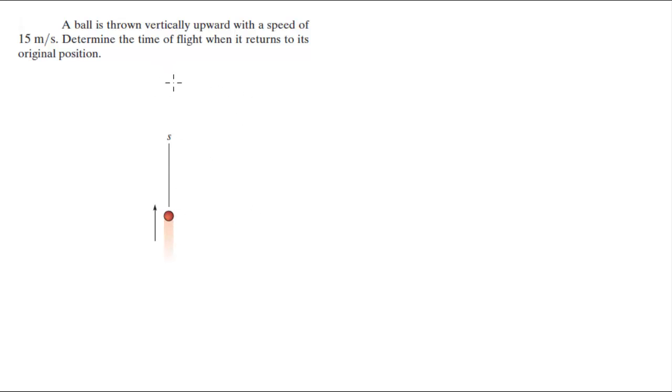Alright guys, so the ball is going to go up and eventually gravity is going to catch up and it's going to stop. So when it's at the maximum height, the velocity is going to be zero.